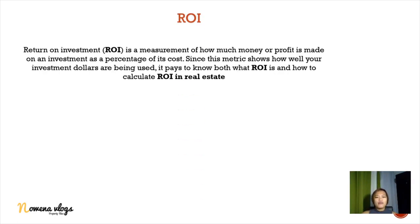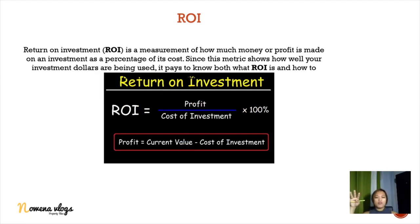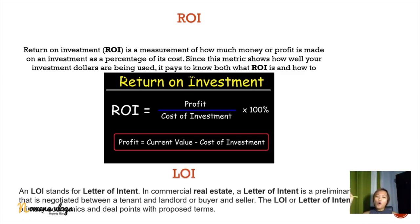ROI stands for return on investment — a measurement of how much money or profit is made. ROI is computed as profit over cost of investment multiplied by 100%, where profit equals current value minus cost of investment. LOI stands for letter of intent. This is used when you are interested in purchasing a property that is not yet available for selling. You submit a letter of intent to the developer so that you will be first in line to choose or get the unit you are interested in when it becomes available for sale.